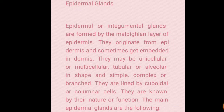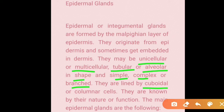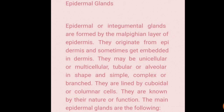Their lining consists of cuboidal or columnar cells. They are known by their nature and function. They are of several types including mucous glands, poison glands, luminous glands, femoral glands, uropygial glands, sweat glands, sebaceous glands, scent glands, and mammary glands.